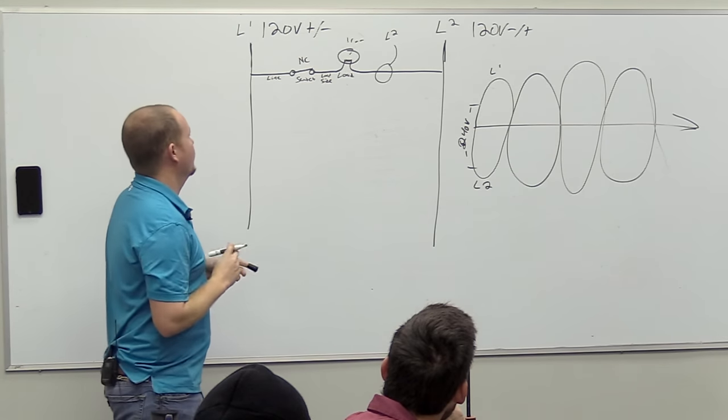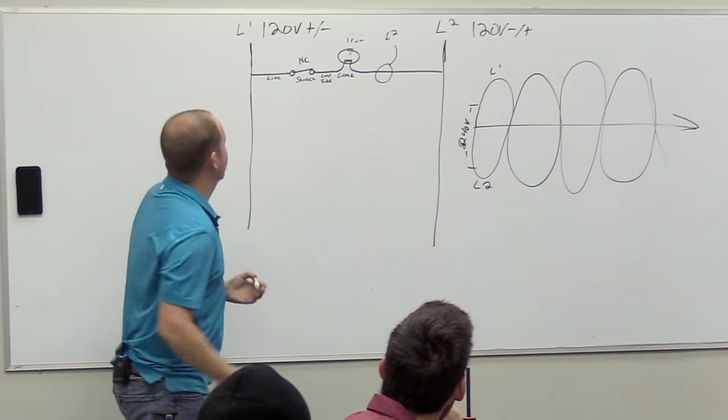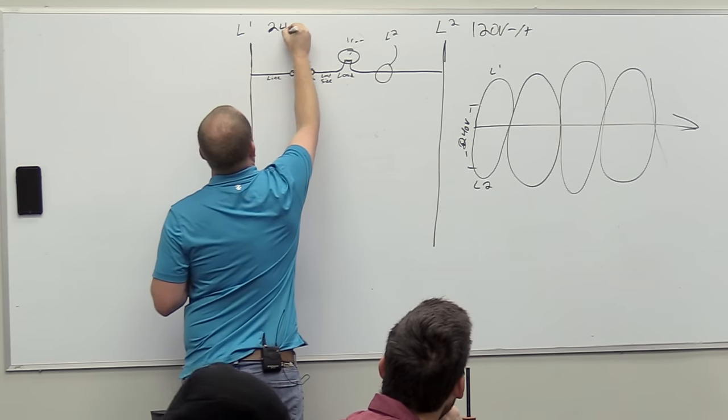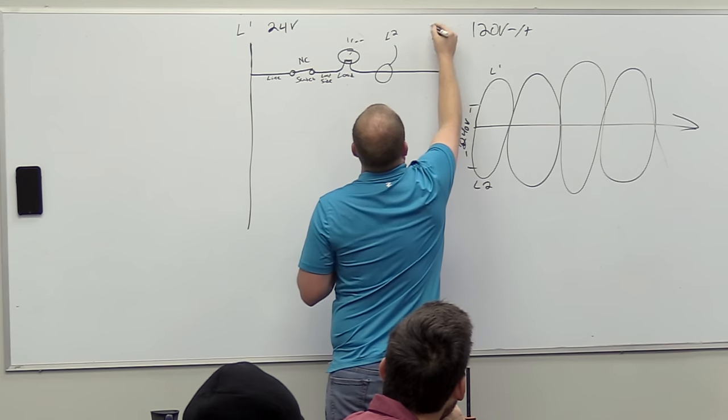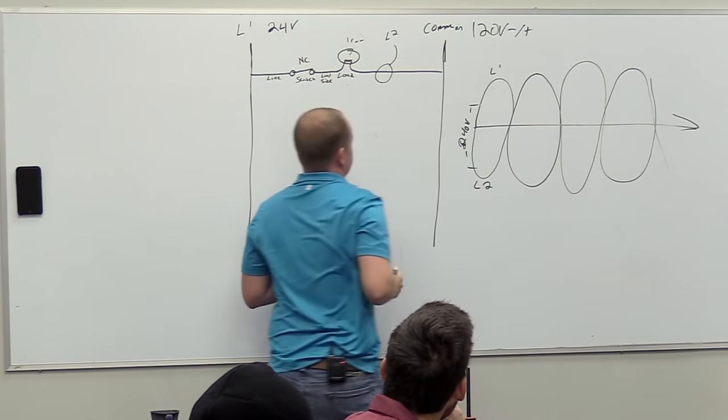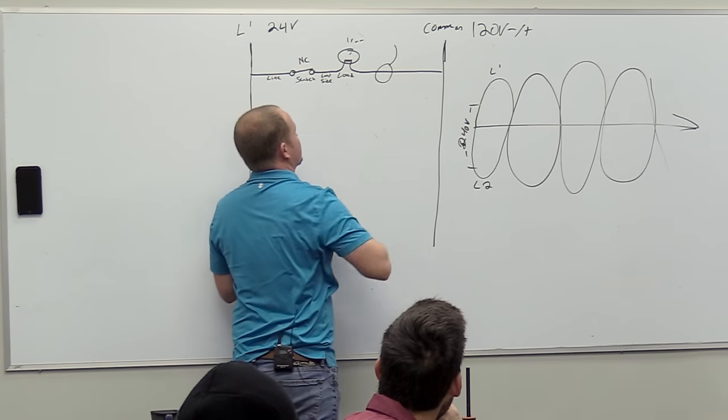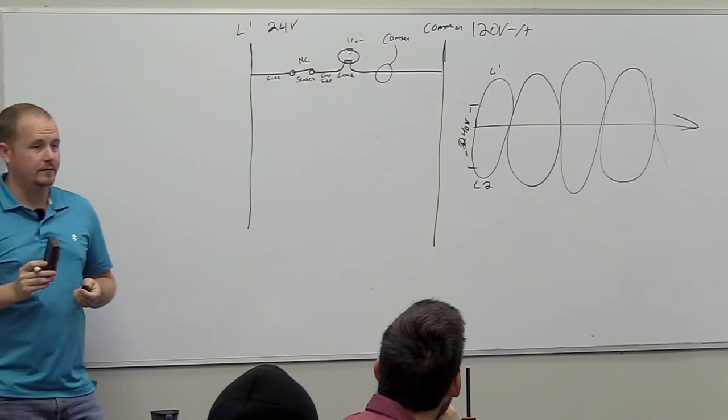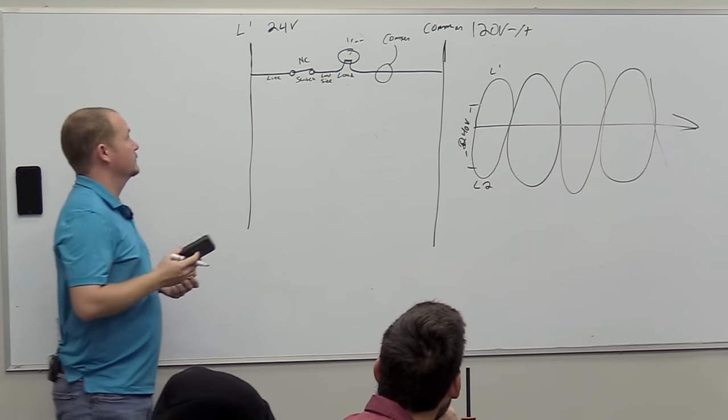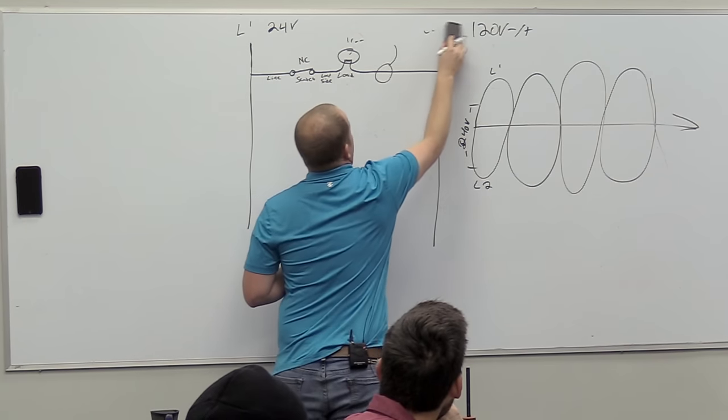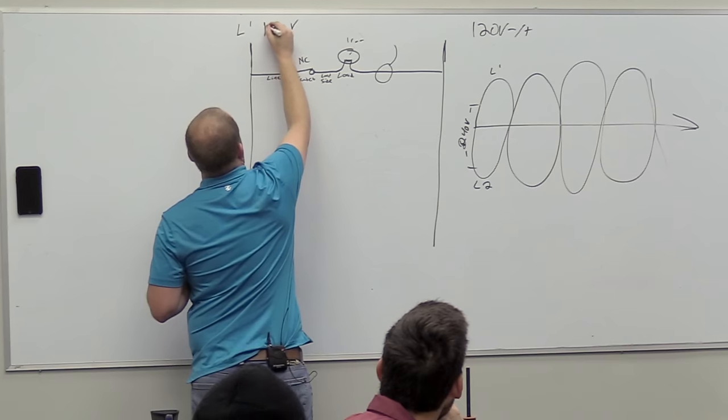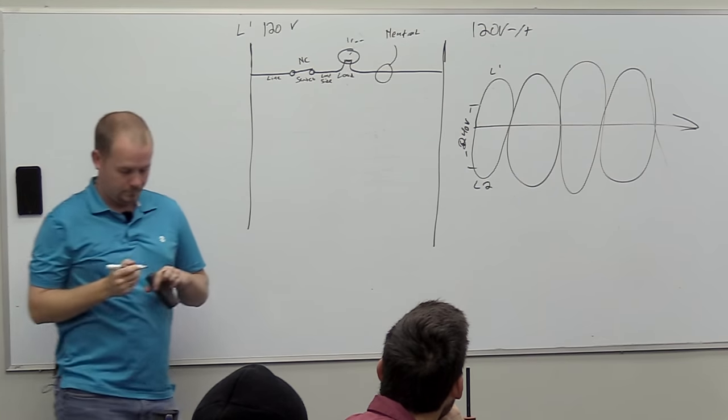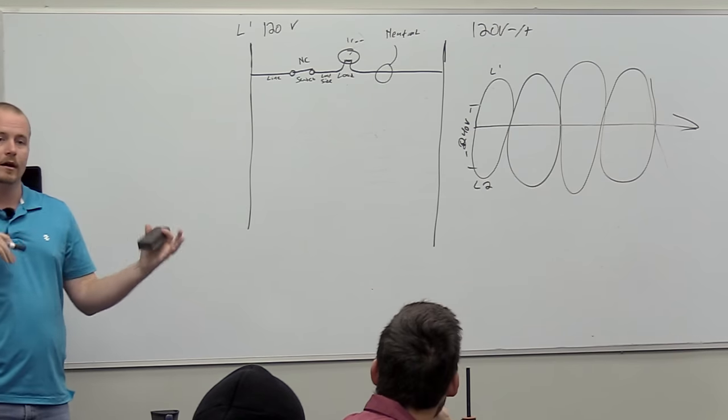That's all we call it. But if this were a 24 volt circuit, let's change this here. We would say 24 volts. And we would call this common. You know what we would call it if it was a 120 volt circuit? We'd call it neutral. So if this is 120 volts, we'd call it neutral. Now, what makes neutral different than common? Anybody know? On a 24 volt circuit? What's the difference between a 24 volt circuit common and a 120 volt circuit neutral?